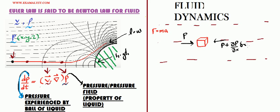What is delta x? Delta x is this distance from here till here — this is my delta x.